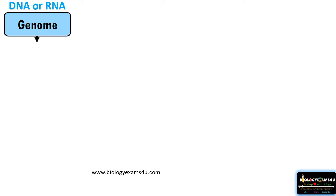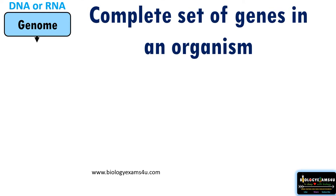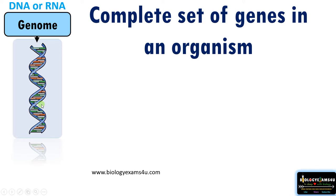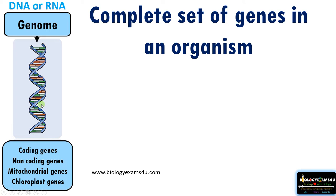Let's begin with genome. Genome means it is a complete set of genes in an organism. Genome includes both coding genes and non-coding genes, and also organelle DNA — that is mitochondrial DNA and chloroplast DNA — all together forms the genome. All organisms' genomes are made up of DNA, with the only exception being some RNA viruses where the genome is made up of RNA.